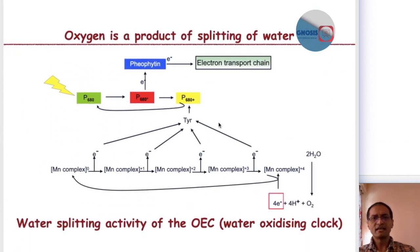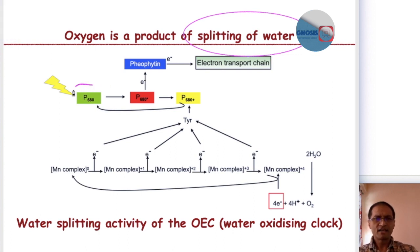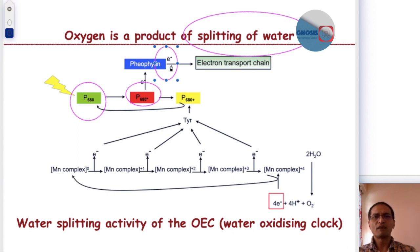Oxygen is produced as a result of the splitting of water — but how does that really happen? What we have learned thus far is that P680 is excited by light, producing the excited P680 molecule. This excited P680 passes its electron to the primary electron acceptor called pheophytin, and then pheophytin passes it to quinone, resulting in charge separation. The electron then moves on to the electron transport chain.